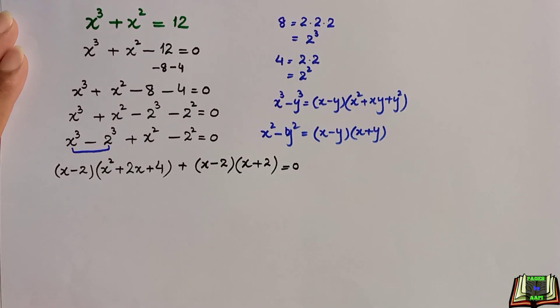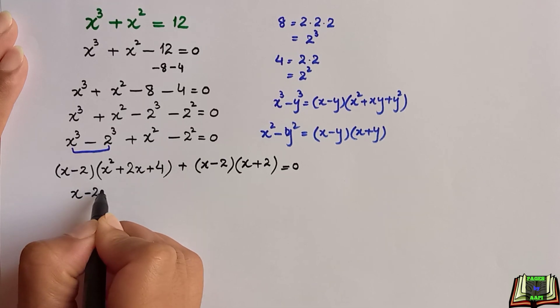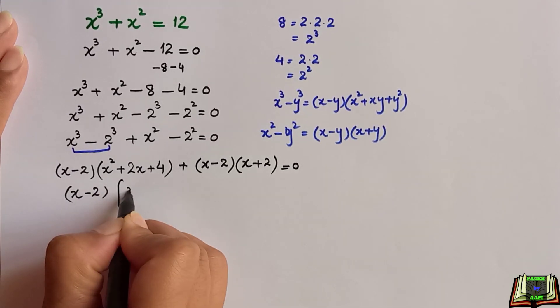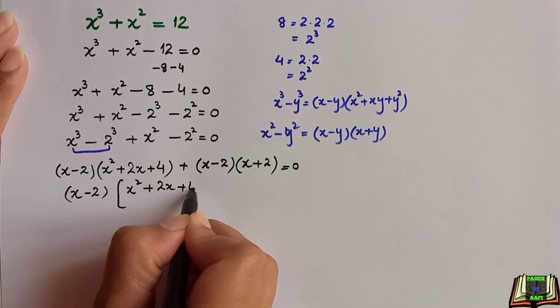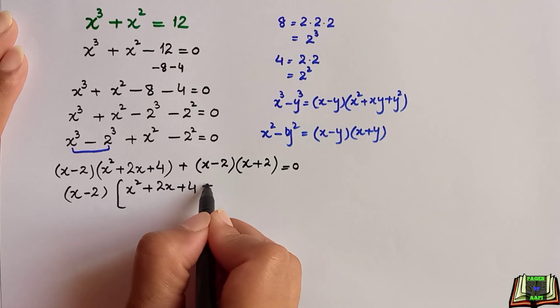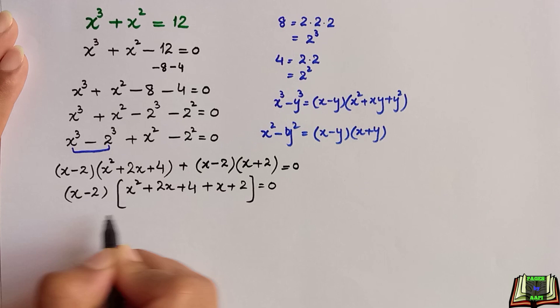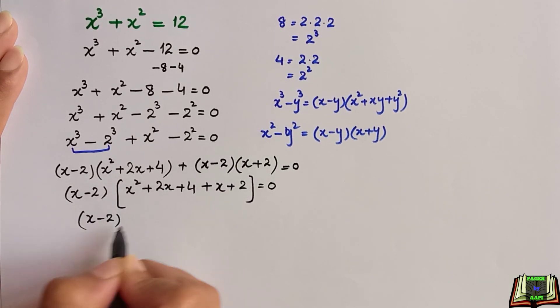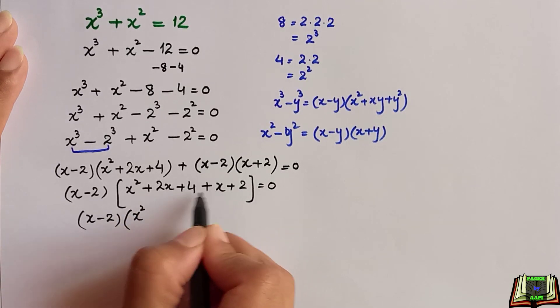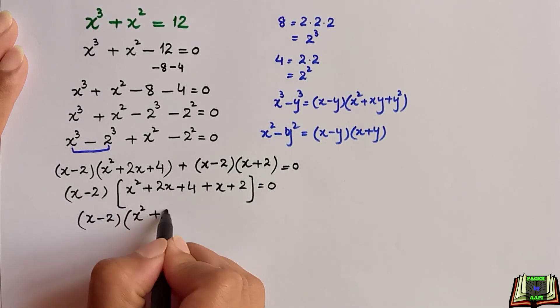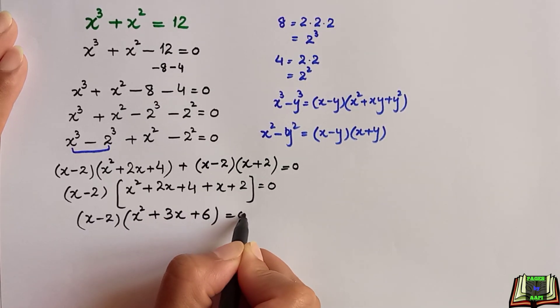Here we can see x minus 2 as common. So in parenthesis we have x square plus 2x plus 4 and here plus x plus 2. Now we will add these like terms together: x square, 2x plus x is 3x, and 4 plus 2 is 6, equals 0.